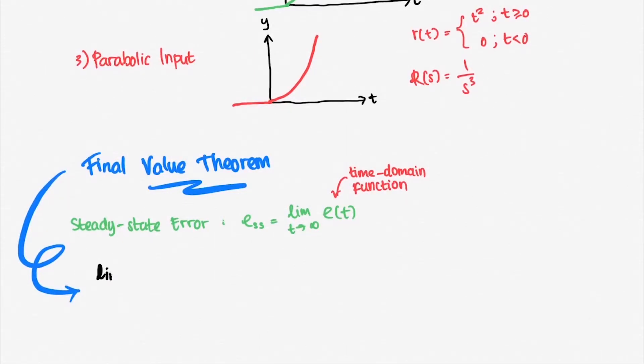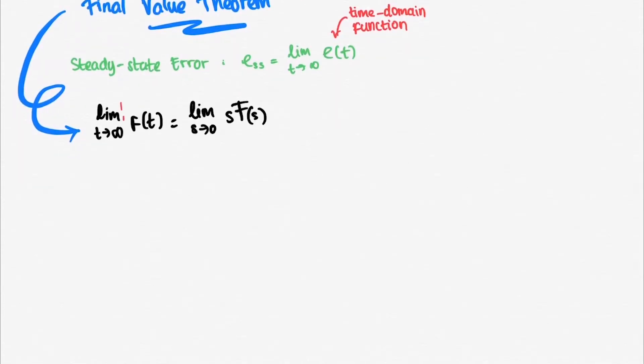But, our system is represented as a frequency domain function. The final value theorem states that limit towards infinity of f of t is equal to limit towards 0 of s f of s, where f of s is a Laplace transform of f of t.